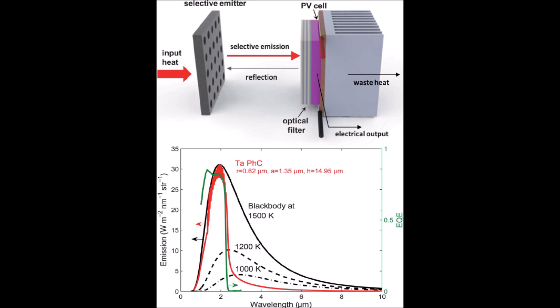Thermophotovoltaics, or TPV for short, are power generating systems that convert thermal energy into electrical energy. These systems use an emitter and a converter, or a PV cell, to achieve power generation, and sometimes filters, concentrators, and reflectors are used to boost power generation and efficiency.